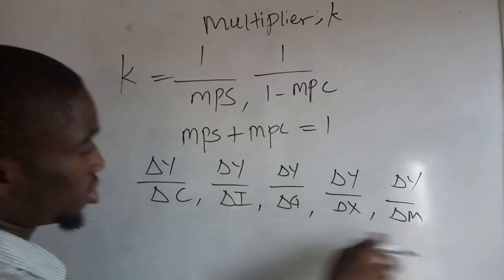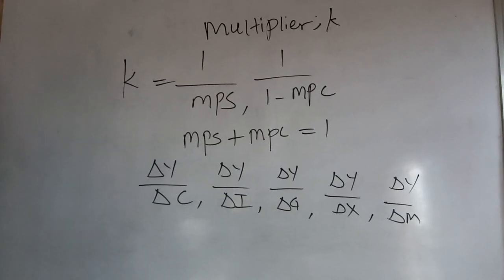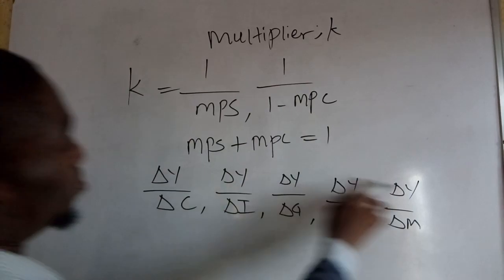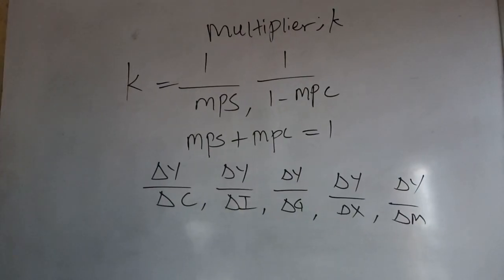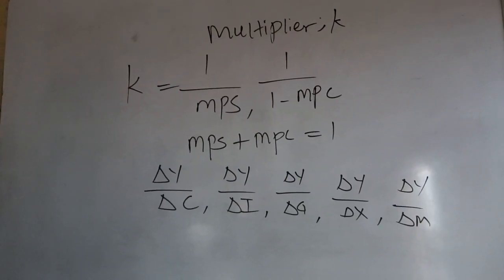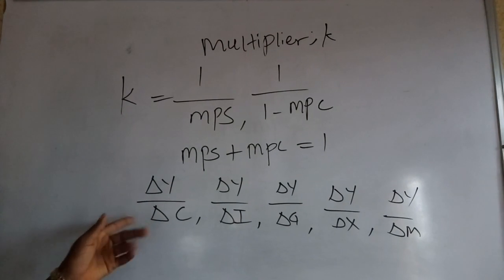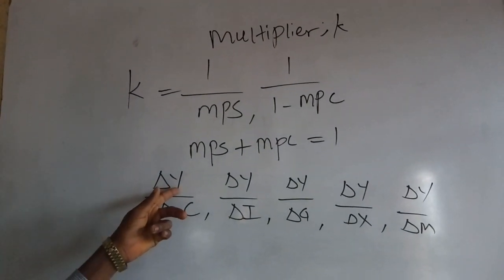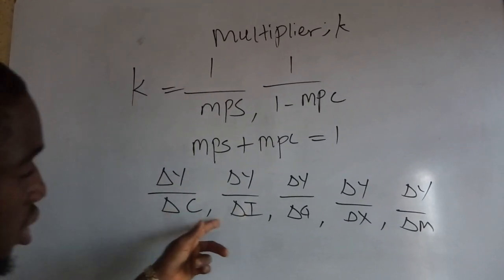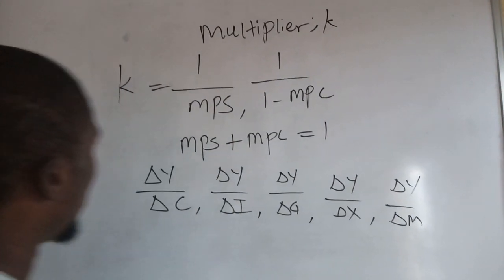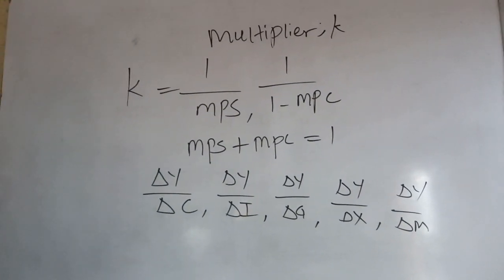Note that the denominators—consumption, investment, government expenditure, exports, and imports—are all components of income. So the multiplier simply means the changes that occur in income with respect to changes in its components.